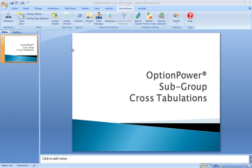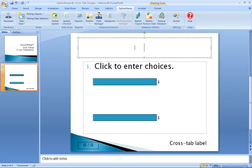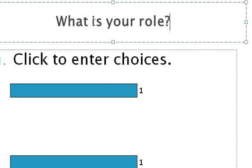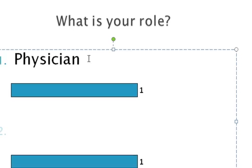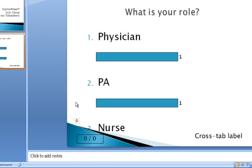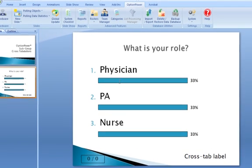Let's give you a quick example of that. We'll create a PowerPoint polling presentation and insert a polling slide that will ask which subgroup members of the audience belong to. In this case we'll say: what is your role? Let's assume for purposes of example this is a medical meeting. So we've got physicians in the room, physicians assistants, and perhaps nurses. We'll ask this question to find out which subgroup they belong to.